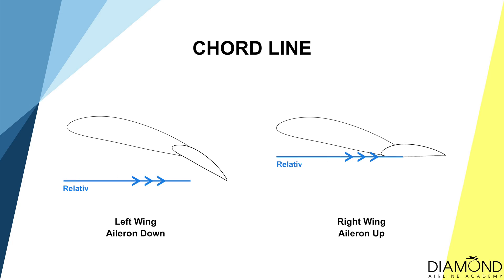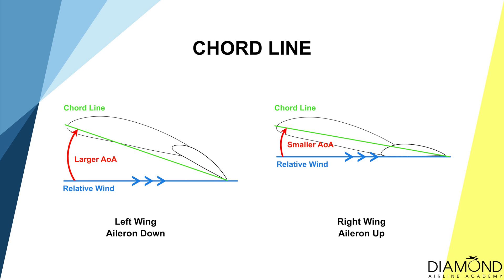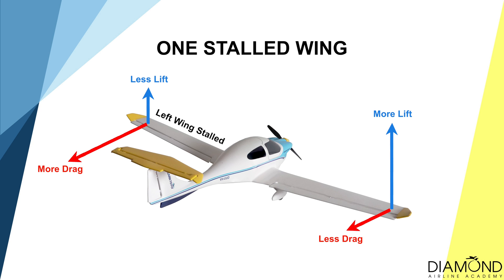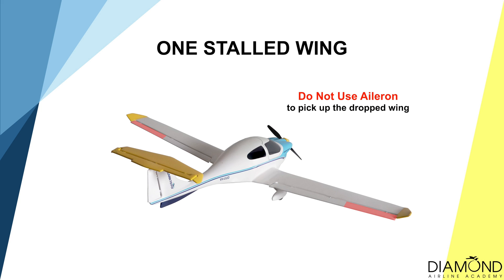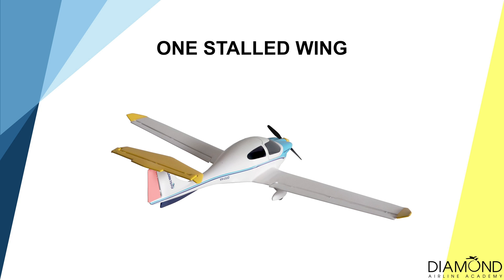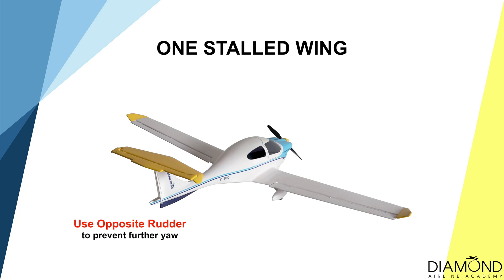The application of ailerons contributes to the imbalance of the angle of attack across the wings. When ailerons are used, it changes the chord line of the aerofoil. Whilst the chord line changes position, the angle of attack of the wing would be affected accordingly. When the aircraft stalls due to unstable air and the aircraft may bank towards one side, do not use aileron in an attempt to pick up the down-going wing, but only use rudder to prevent further roll and yaw.